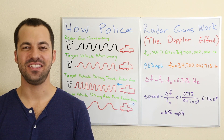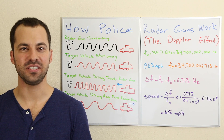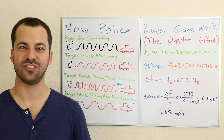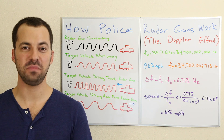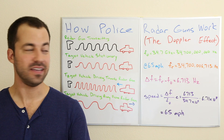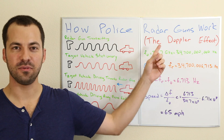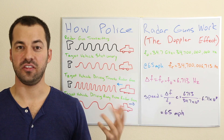Hey, what's up guys? In this video we're going to be talking about how a police radar gun can actually calculate the speed of a moving vehicle. It does it by a principle known as the Doppler effect.